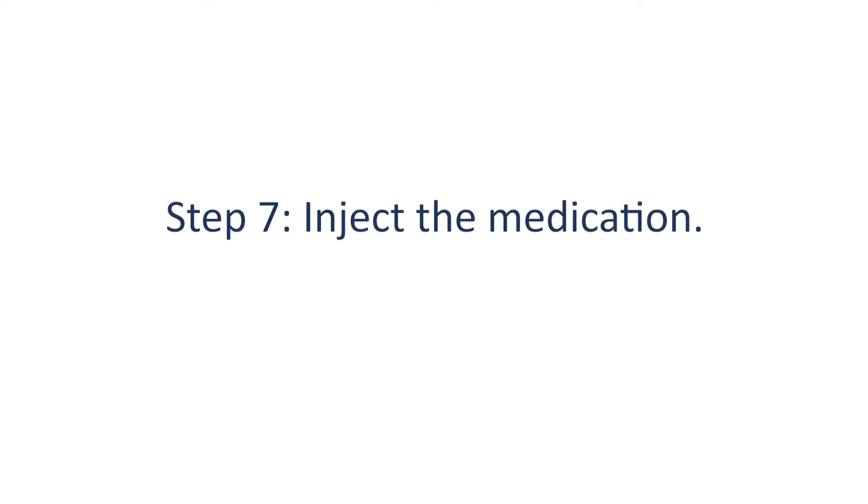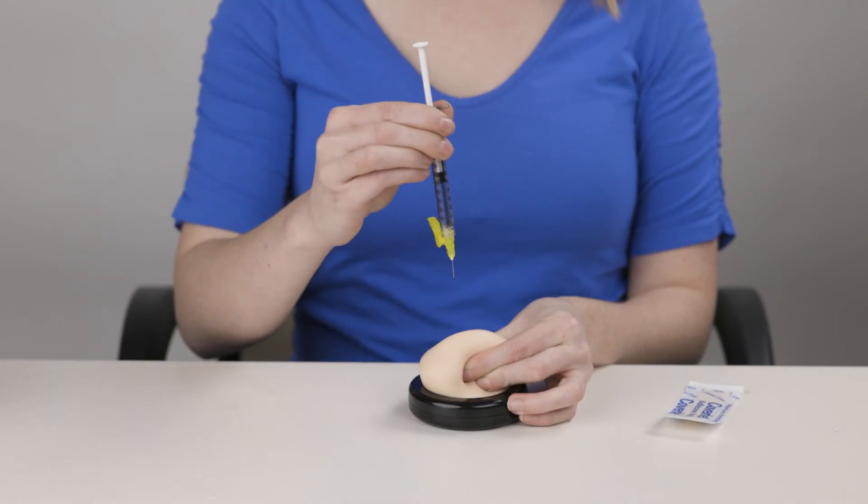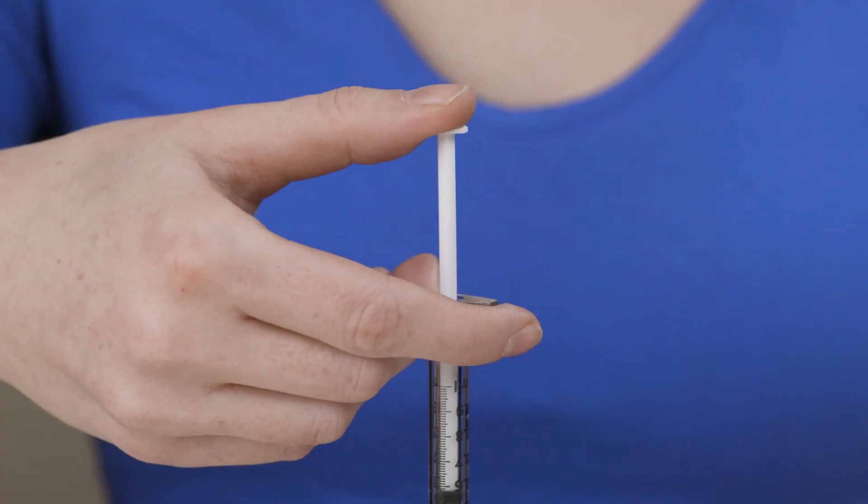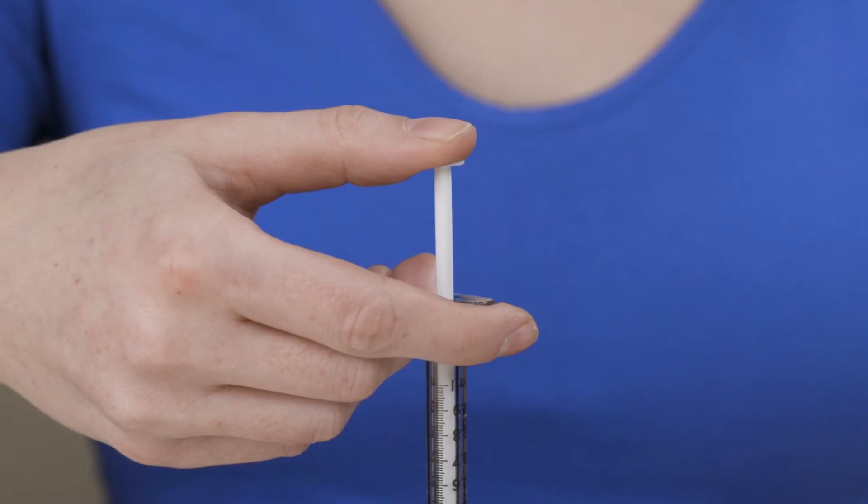Step seven, inject the medication. Put the needle straight into the pinched skin in one smooth, quick motion. Use your thumb or index finger to slowly push the plunger all the way down until all the medication is injected.